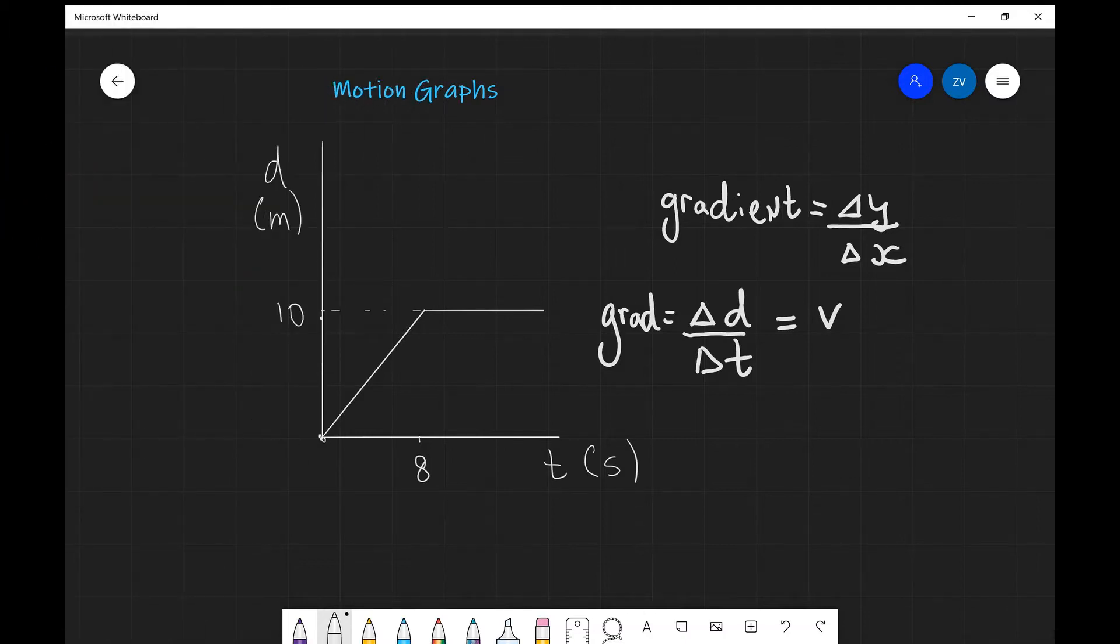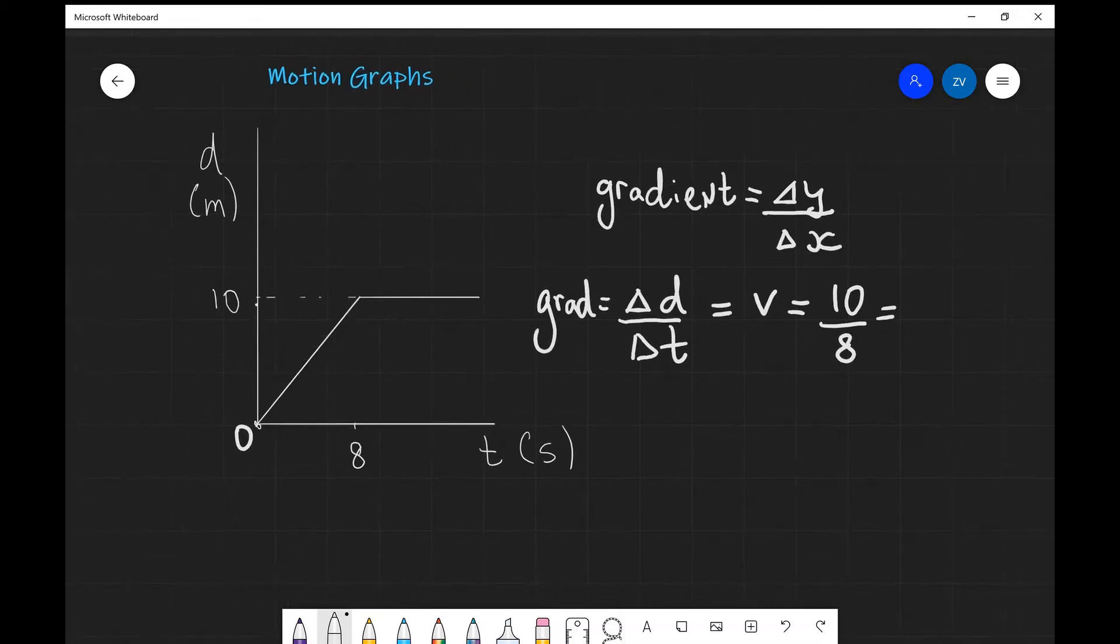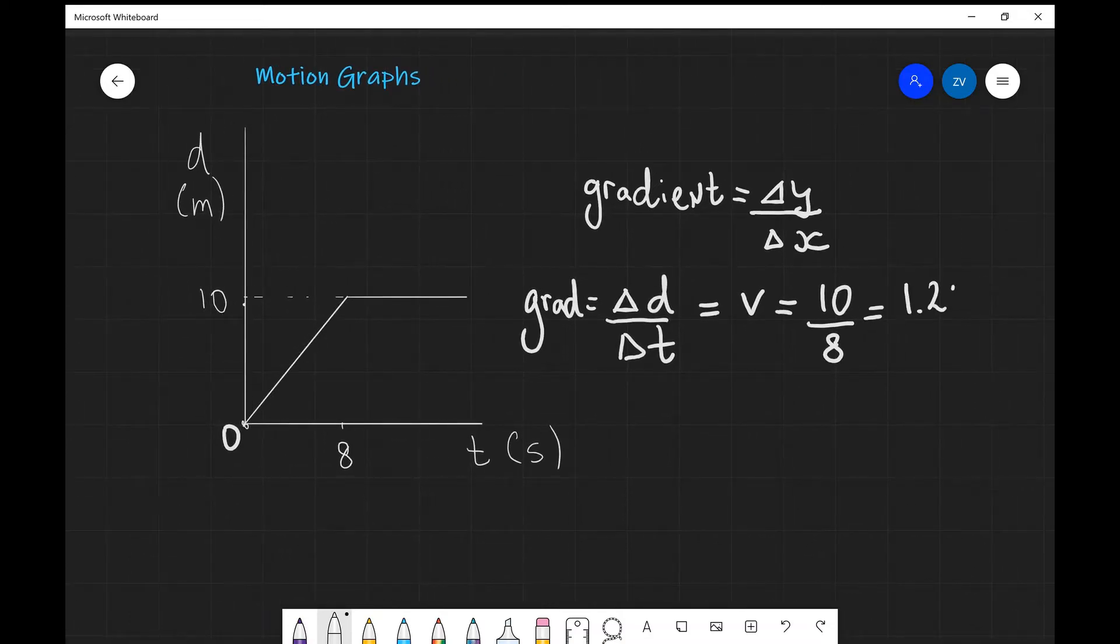In our particular example, our velocity will be the change in displacement on the y-axis which goes from 0 up to 10, so this is going to be just 10 meters. And our motion in this case occurs for 8 seconds. So it'll be 10 divided by 8 which is equal to 1.25 meters per second. This is what the velocity for this example will be.